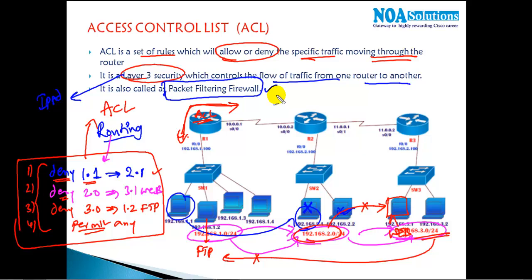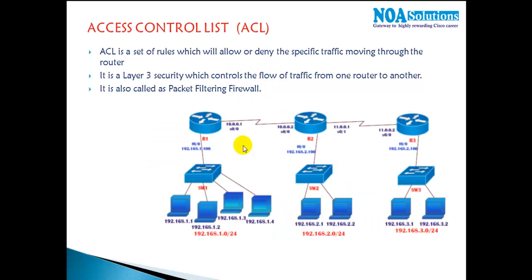It filters packets as they go through the router, but it's not doing the complete job of a full firewall. ACL is a basic filtering you can do on routers — you can allow or deny selected services or selected hosts moving through the router. This is a basic overview of ACLs.